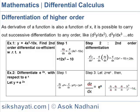Substitute z for e^x. So z equals e^x, then dz/dx equals e^x. Now dy/dz equals (dy/dx) divided by (dz/dx), which equals 2e^(2x) divided by e^x, which equals 2e^x.